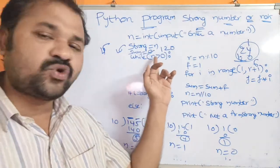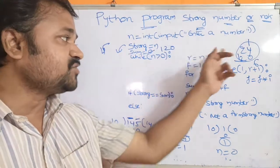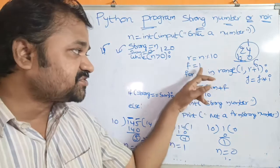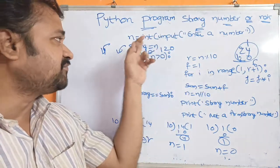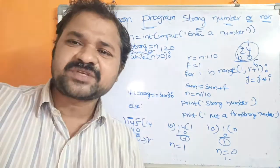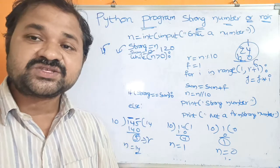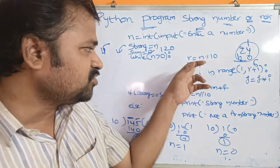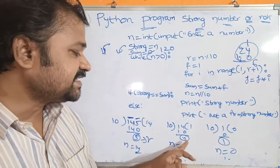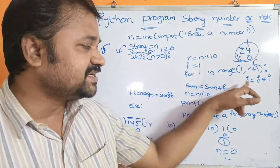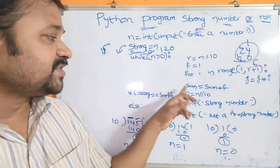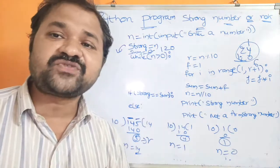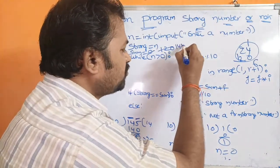Control returns to the while loop. While 14 > 0, the condition is true. r = 14 % 10 = 4. We must reset f to 1 before the for loop — if we didn't, f would still hold the previous value of 120, and 120 × 4 × 3 × 2 × 1 would give the wrong result. After the for loop, f = 4 factorial = 24. sum = sum + f = 120 + 24 = 144. Now sum is 144.